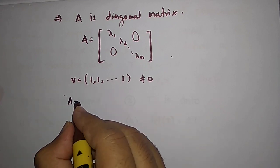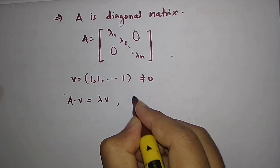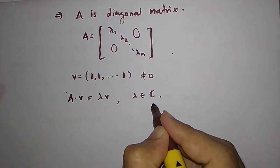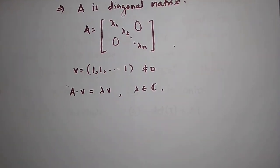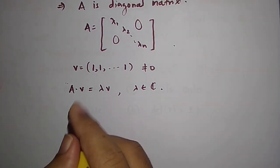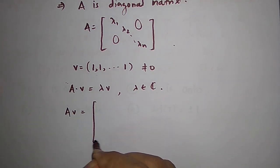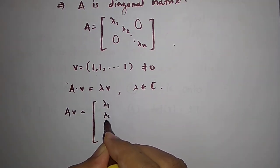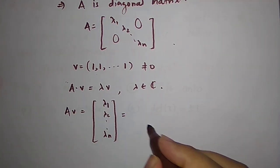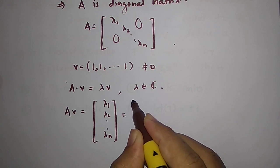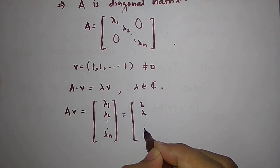What does that mean? A v is equal to some λ v where λ belongs to the complex number. But what is A v? A v is just the λ_1, λ_2 up to λ_N and this is saying that this is equal to λ times v and the λ times v is just the λ at each coordinate.